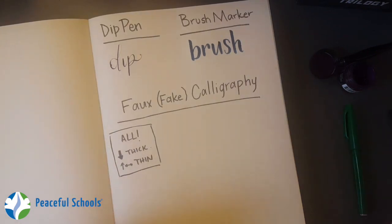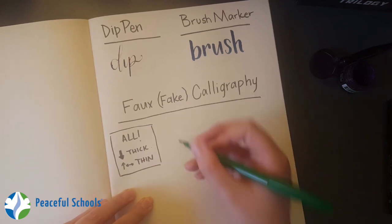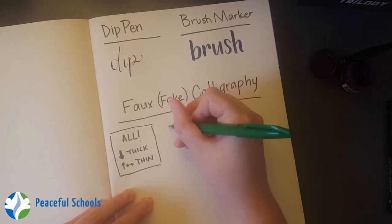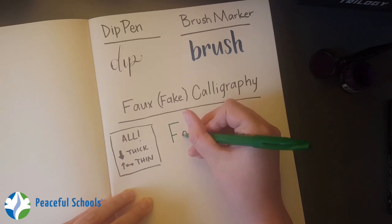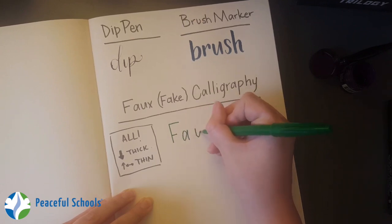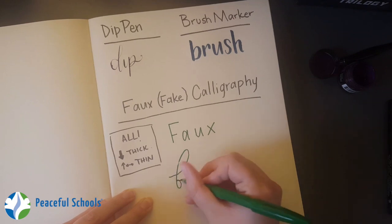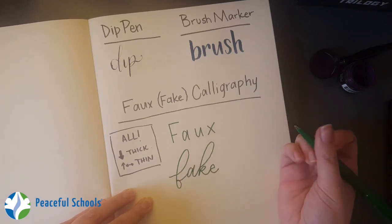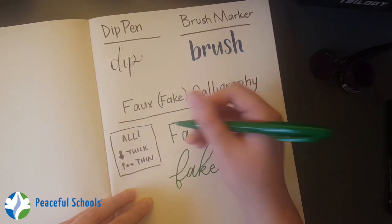But for this fake or faux kind, we start just by writing like regular. You can use print, you can use cursive, whatever you like, but just make sure that your letters are far enough apart because we're going to kind of take up some space a little later. So I'm going to write faux in print, and then I'm going to write fake in cursive just so you can see both.